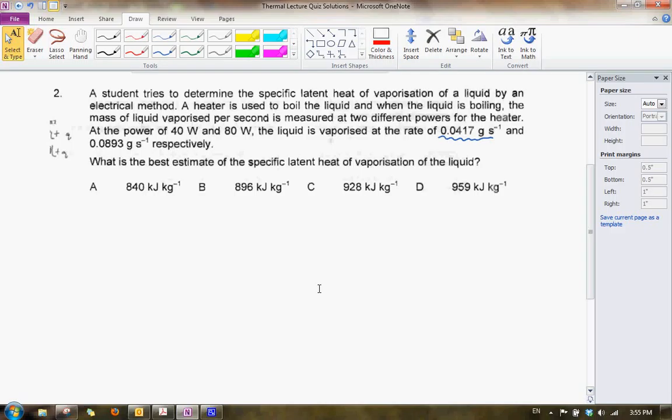Okay, let's now look at question 2. Let's read the question together. A student tries to determine the specific latent heat of vaporization of a liquid by an electrical method. A heater is used to boil the liquid, and when the liquid is boiling, the mass of liquid vaporized per second is measured at two different powers for the heater.